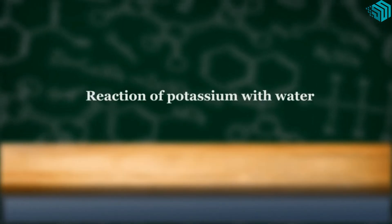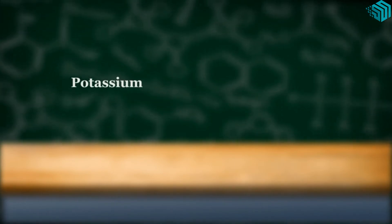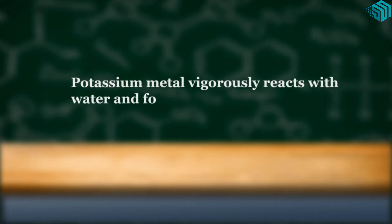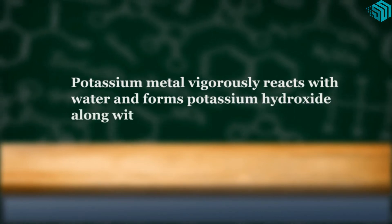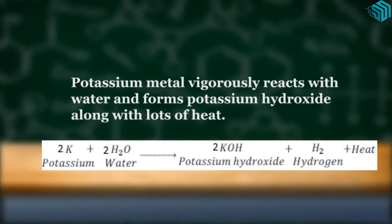Reaction of potassium with water. Potassium metal vigorously reacts with water and forms potassium hydroxide along with lots of heat. Potassium plus water gives us potassium hydroxide plus hydrogen plus heat.